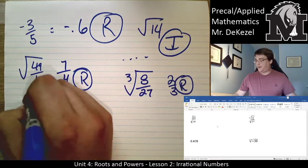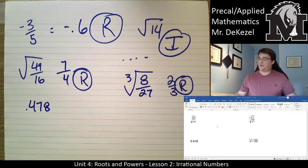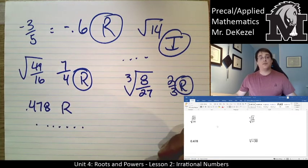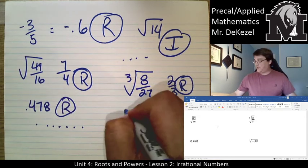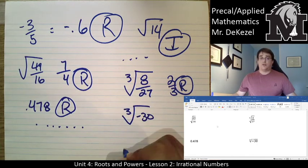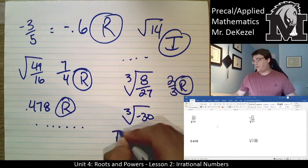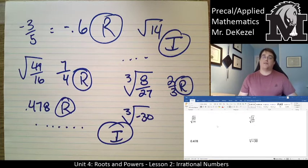We have 0.478 — the rule is: if it's a decimal that stops, it's rational; if it kept going forever it would be irrational. This one stops, so it's a rational number. Then we have the cube root of negative 30 — punching that into a calculator gives a crazy non-repeating decimal, so it is an irrational number.